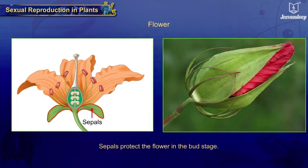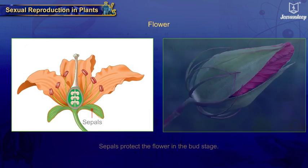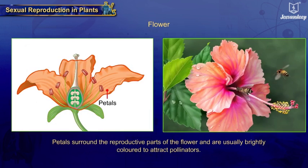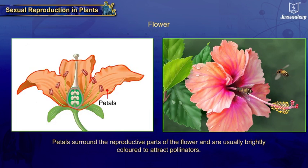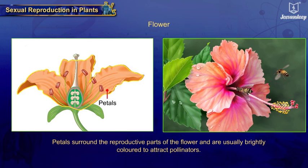Sepals protect the flower in the bud stage. Petals surround the reproductive parts of the flower and are usually brightly colored to attract pollinators.